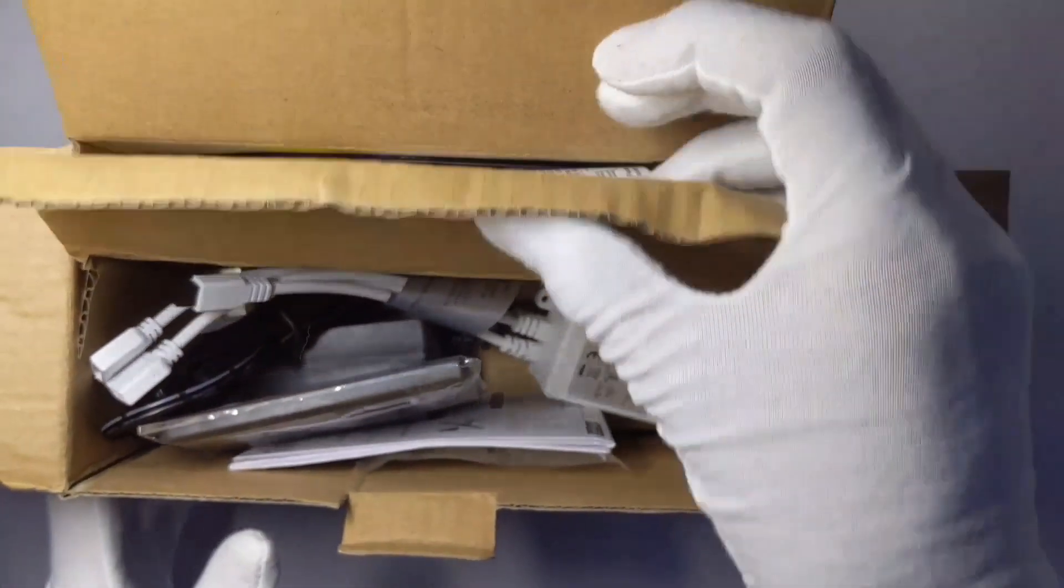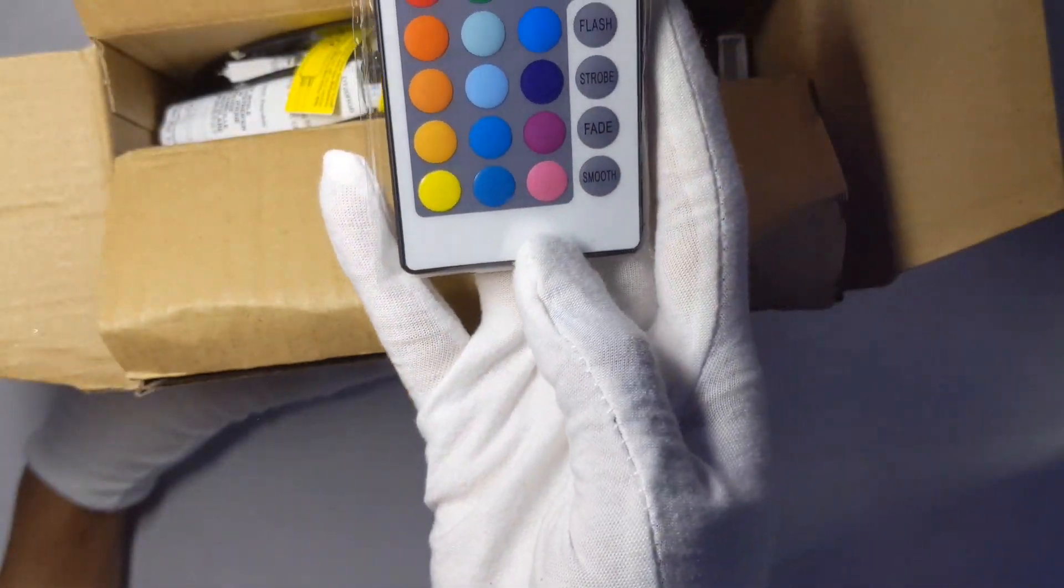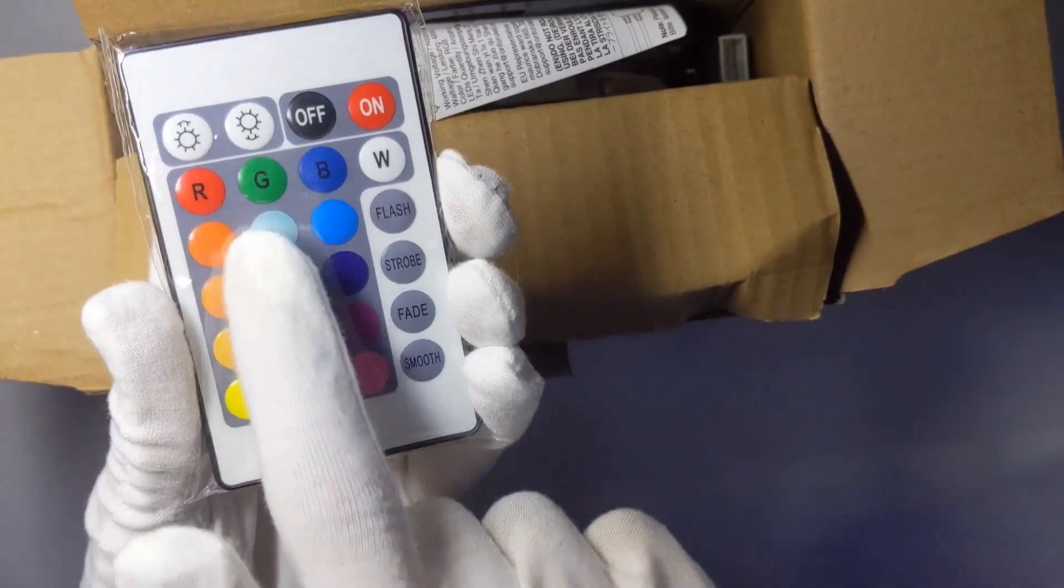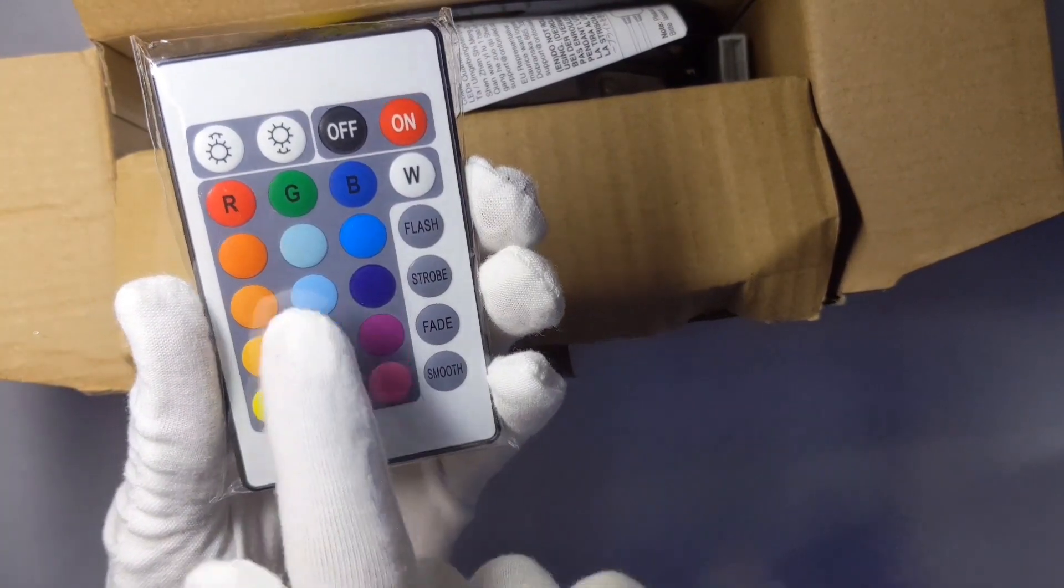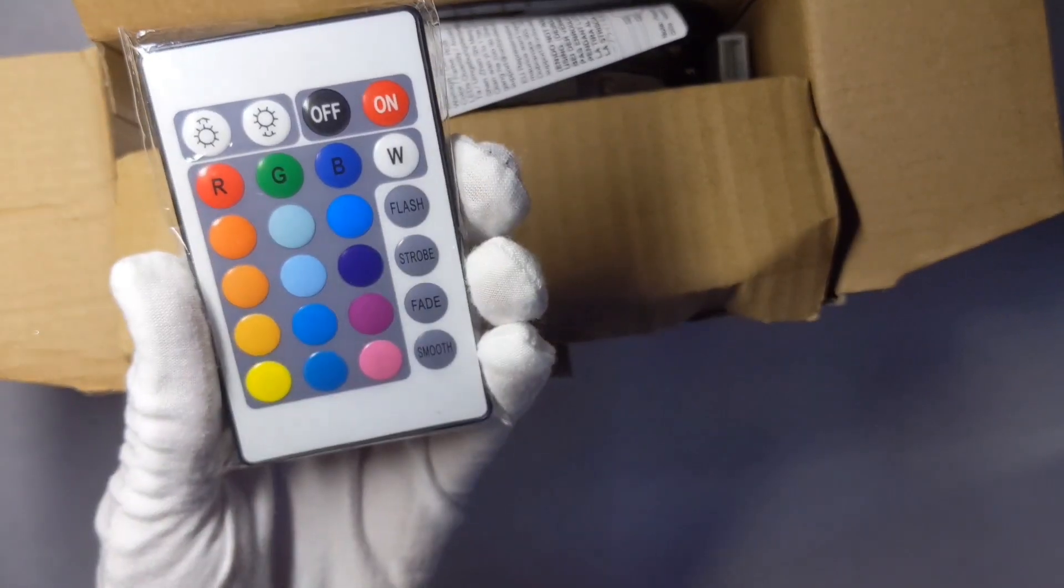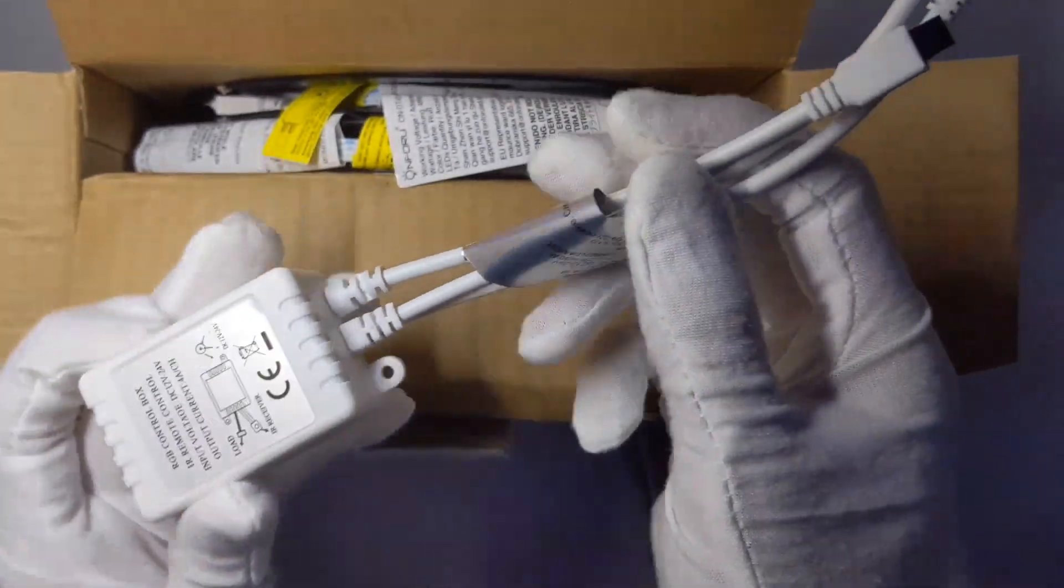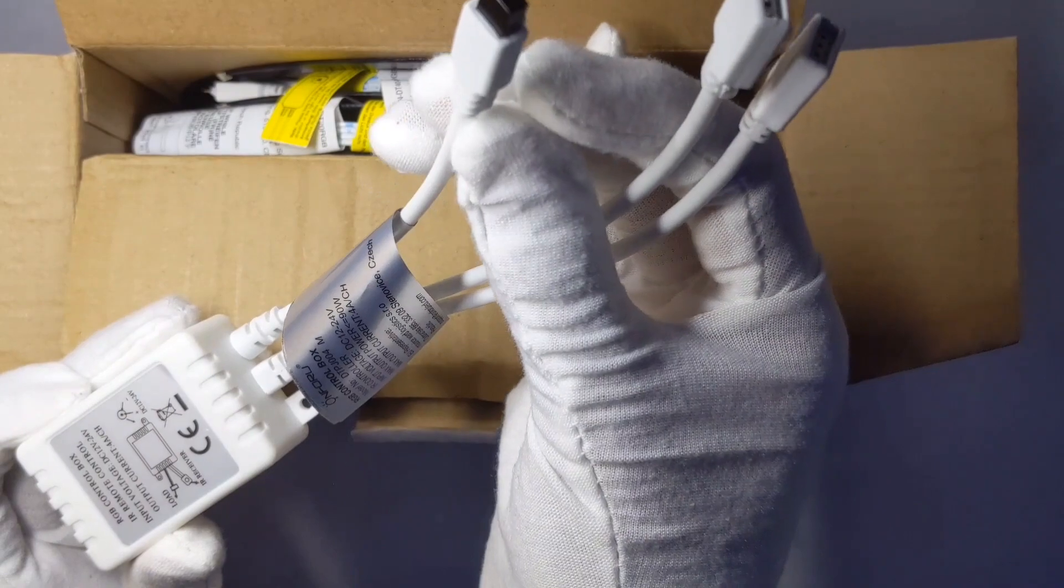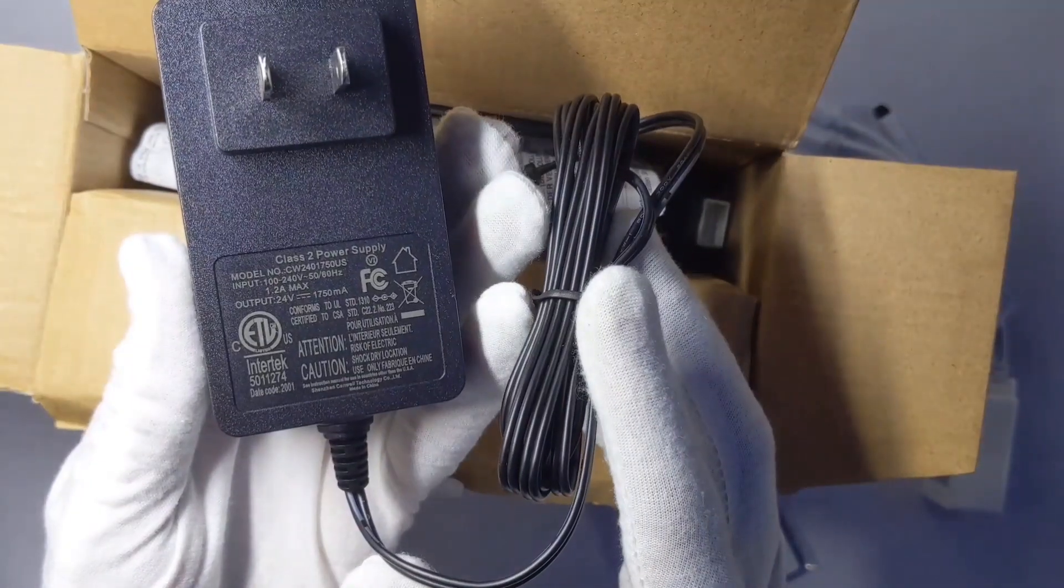24 key remote with some more colors here. You have flash, strobe, fade, smooth, on/off, the brightness adjuster, and a white button. The IR receiver is just a white box with the infrared and two splitter ends. The 24 volt power supply, screws and clips.